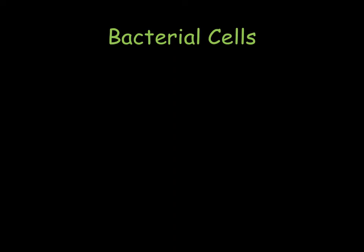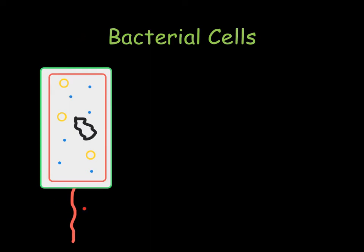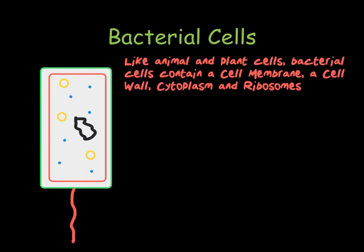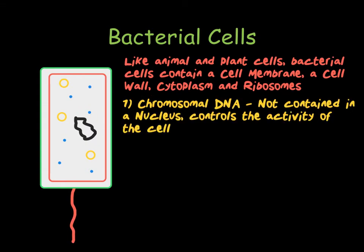The final type of generalised cell you need to know are bacterial cells. These are much, much smaller. However, they do have some similarities to both plant and animal cells. Bacterial cells look quite different to animal and plant cells, but they do have some of the same features — for example, they have a cell membrane, a cell wall, cytoplasm, and ribosomes. However, they do have three features that are exclusive to them. First of all, they have chromosomal DNA. This is not contained inside a nucleus, but rather floats freely in the cytoplasm. It is one long circular chromosome.